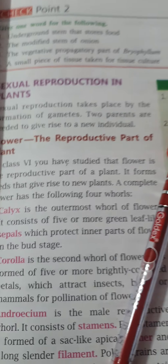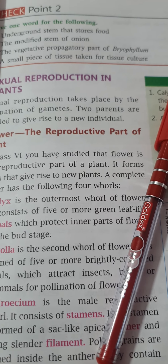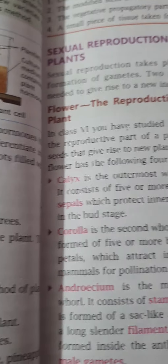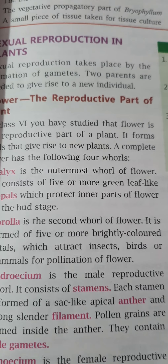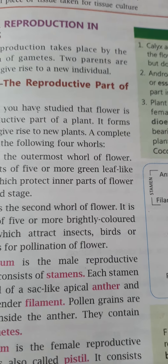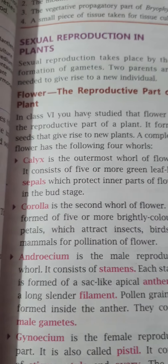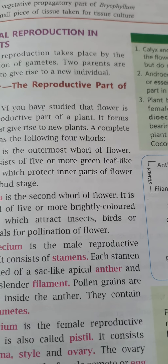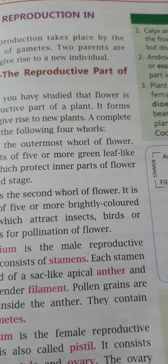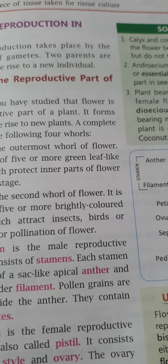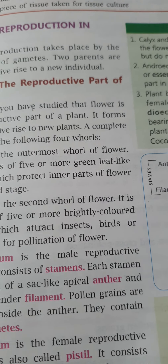Sexual reproduction takes place by the formation of gametes. Two parents are needed to give rise to a new individual plant or a flower. Sexual reproduction has to involve two plants combined together — only then can they give rise to a new individual. Flowering plants, also called angiosperms, use a sexual mode of reproduction. Reproduction in plants mainly revolves around the flower.